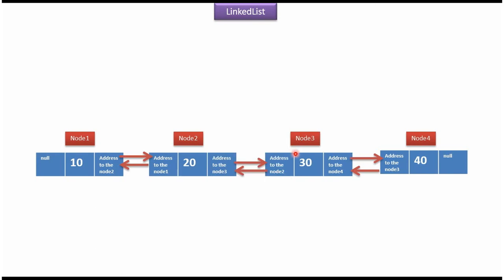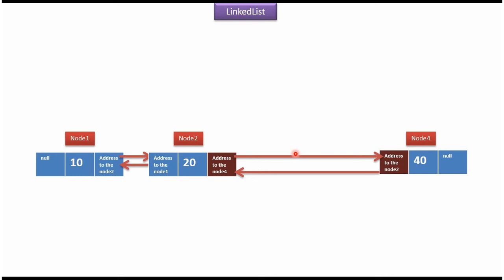If I remove node 3 from the linked list, the address of the previous node and the address of the next node of node 2 and node 4 will change. To remove an element from the linked list, no shifting is needed like in ArrayList — only the address of the previous node and the address of the next node needs to be changed. So removal of an element from the linked list is faster than ArrayList.